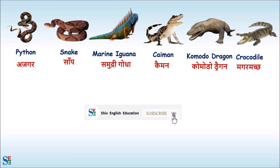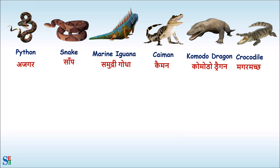Snake — Saap. Marine Iguana — Samudri Goda. Caiman — Caiman. Komodo Dragon — Komodo Dragon. Crocodile — Magramach.